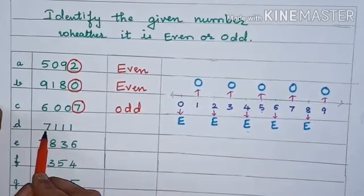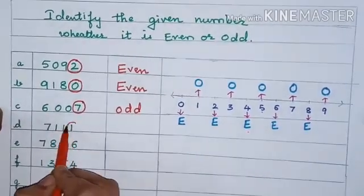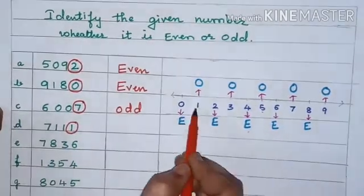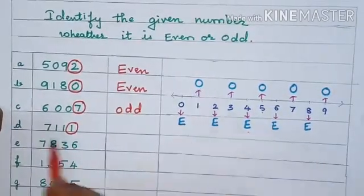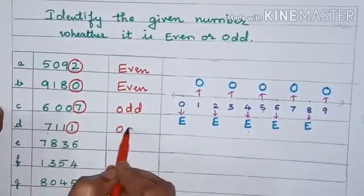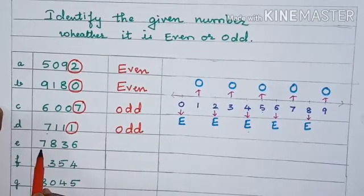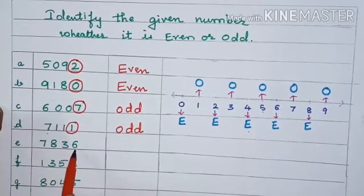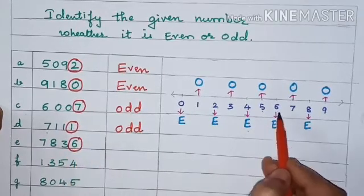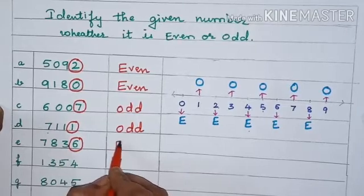Now next one: 7,111. What is the last digit? 1. So 1 is an odd number, and 7,111 is an odd number. The next one: 7,836. Children, see the last digit — 6. As we know, 6 is an even number, so this number is even.